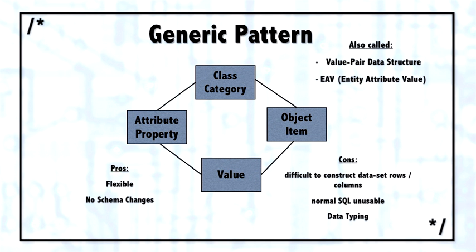As a workaround for that data typing problem, sometimes people will build the generic pattern with a separate Value table for each different data type. And although that does give you some data typing, it makes it even more difficult to extract out data. So while the generic pattern can seem appealing and can seem very flexible, I don't recommend it.